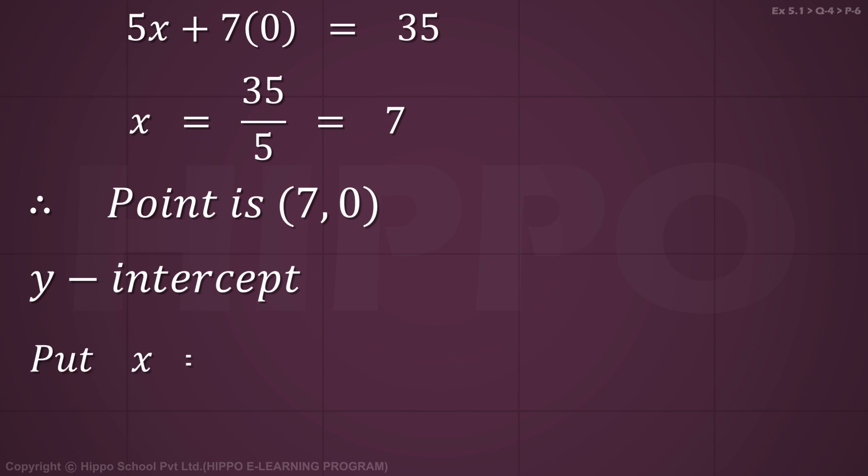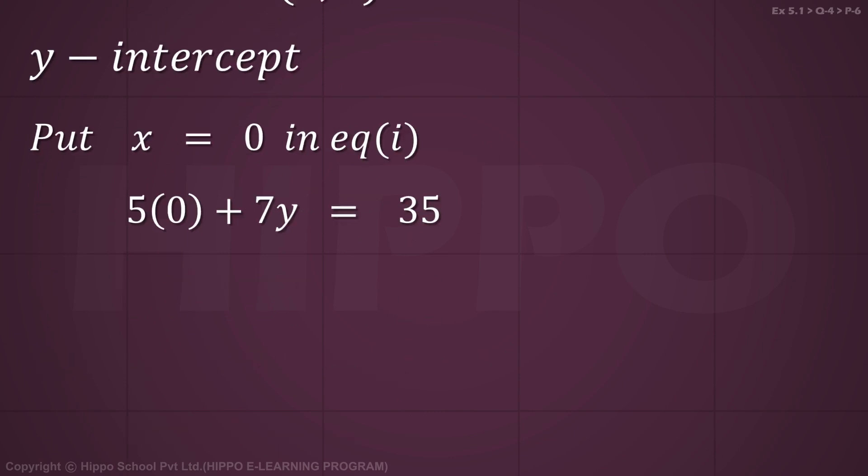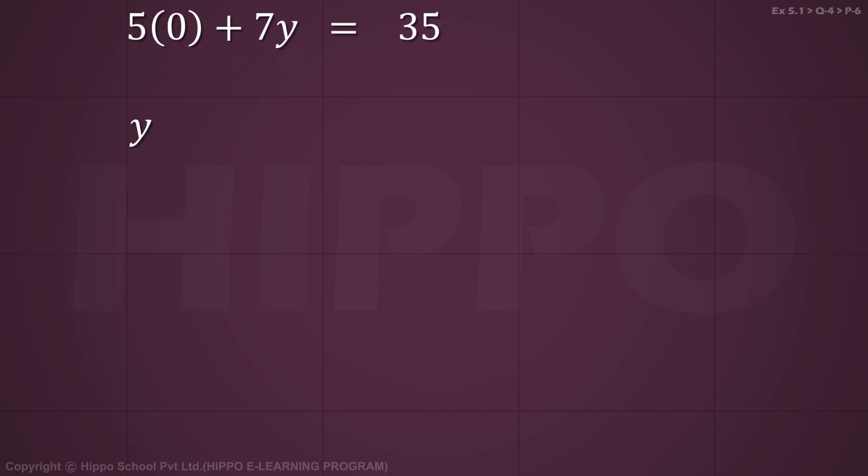For the y-intercept, put x equals 0 in equation 1. 0 plus 7y equals 35, which gives y equals 35 by 7, equal to 5. So the point is (0,5).